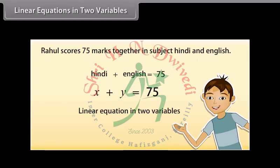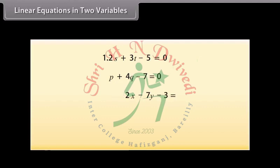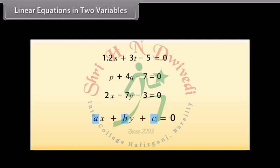Some other examples of linear equations in two variables are: 1.2S plus 3T is equal to 5; P plus 4Q is equal to 7; and 3 is equal to 2X minus 7Y. We can put these equations in the form: 1.2S plus 3T minus 5 is equal to 0; P plus 4Q minus 7 is equal to 0; and 2X minus 7Y minus 3 is equal to 0. So any equation which can be put in the form AX plus BY plus C is equal to 0, where A, B and C are real numbers and A and B are not both 0, is called a linear equation in two variables.